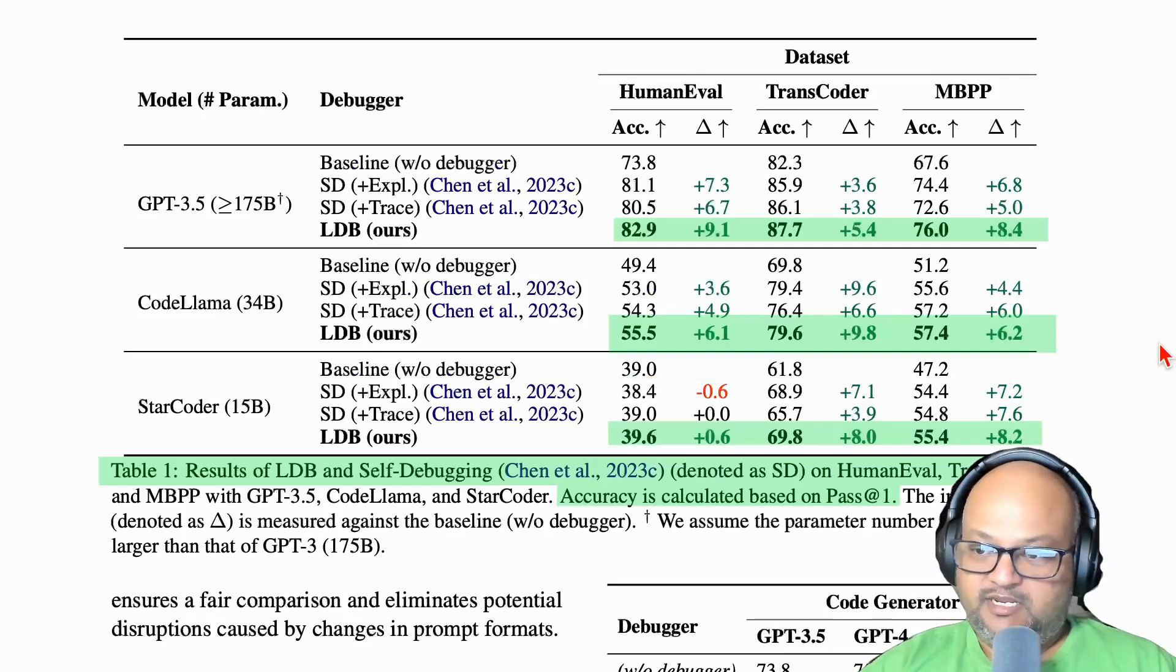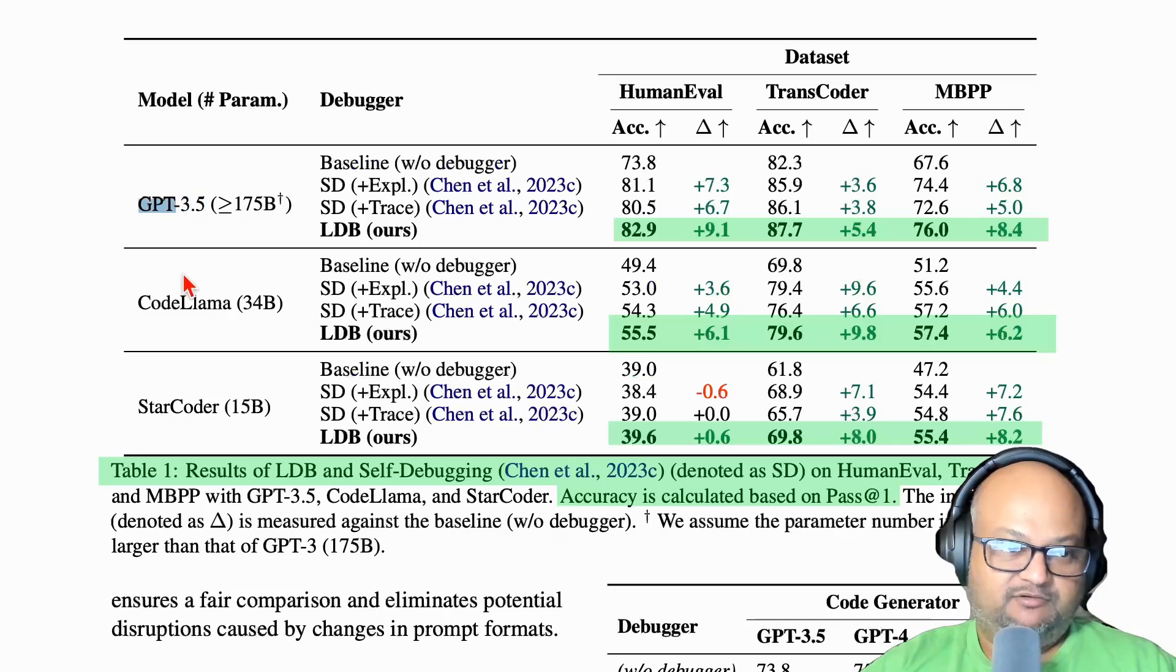I do want to look at the concrete prompts that they used. But before we jump into that, let's quickly look at the results they got. They tried it with three large LLMs: GPT 3.5, CodeLlama, which is a 34 billion parameter model, and StarCoder, which is a 15 billion parameter model.